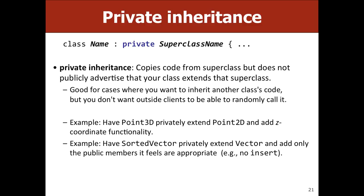Generally, you'd use private inheritance for something like a SortedVector to hide the insert-at-index method. Or in the 2D point example, if 2D point extends 3D point privately, you'd hide the change-Z-coordinate method so it's not publicly accessible. A real example: if making a GSquare, you might privately inherit from GRect to share drawing and containment logic while hiding width and height setters.